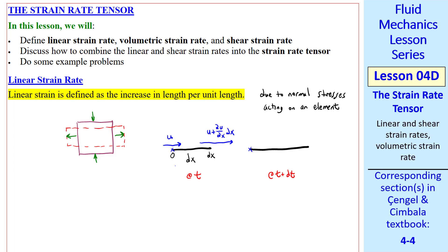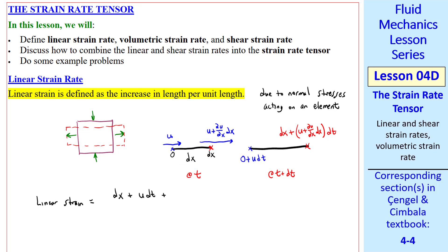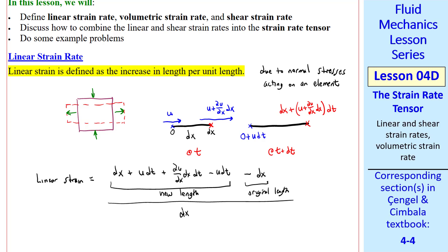What is the new location of initial point 0? It's the initial distance 0 plus the speed times dt, to first order. What about initial point dx? Its new location is its old location dx, plus its speed, u plus ∂u/∂x · dx, times dt. Linear strain is the increase in length per unit length. So we take this new length minus the old length, divided by the old length. The terms simplify and the dx's cancel, so the linear strain becomes ∂u/∂x · dt.